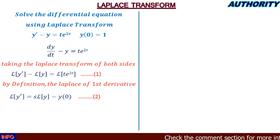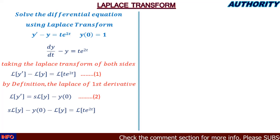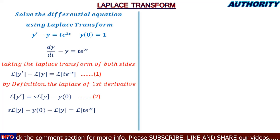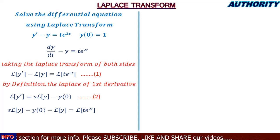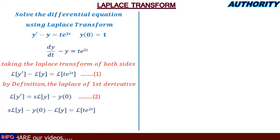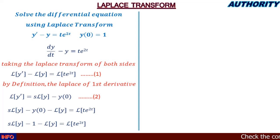Substituting equation two into equation one, we get: s·L{y} − y(0) − L{y} = L{t e^{2t}}. Applying the initial value y(0) = 1, we substitute to get: s·L{y} − 1 − L{y} = L{t e^{2t}}.